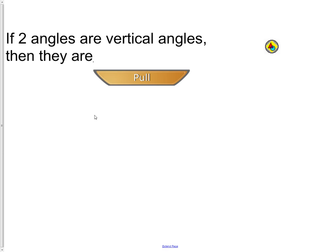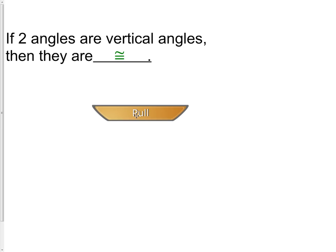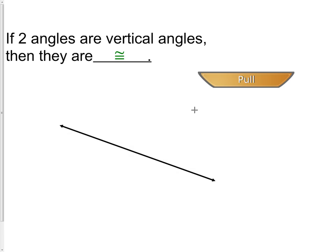If two angles are vertical angles, then they are congruent. We've learned about vertical angles before. Vertical angles are created by two lines which intersect each other. When we have two lines that intersect each other, we are left with the vertical angles.